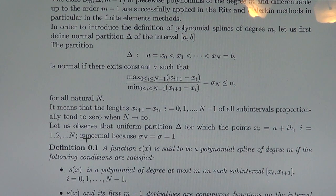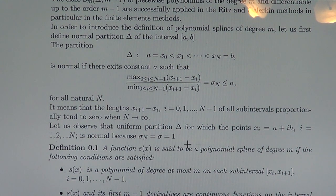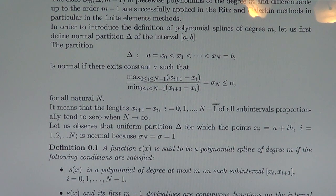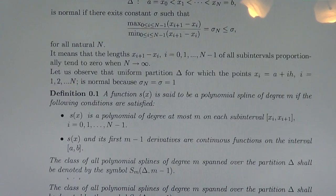Let us observe that the uniform partition, for which the points are equidistant — x_i equals a plus i*h for all i from 1 up to n — is normal, because the denominator and numerator are the same, and σ_n equals 1, and that σ independent of n is also 1. So a uniform partition of the interval is always a normal partition.